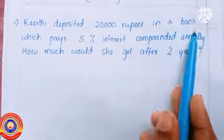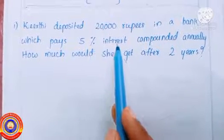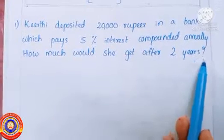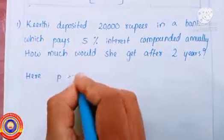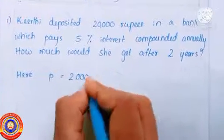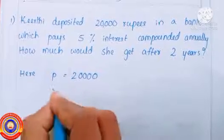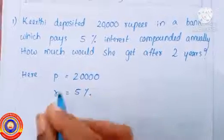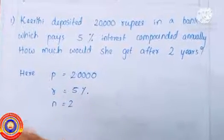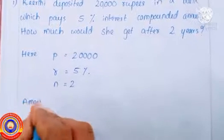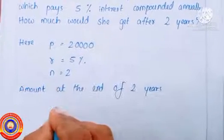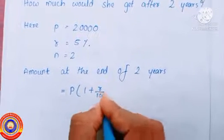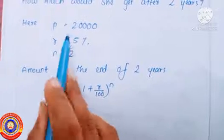Using this idea, let's do a problem. Kirti deposited twenty thousand rupees in a bank which pays five percent interest compounded annually. How much would she get after two years? Here principal P is equal to twenty thousand rupees, r is five percent, and n is equal to two years. The amount at the end of two years is P into one plus r by hundred the whole raised to n, that is P is twenty thousand.